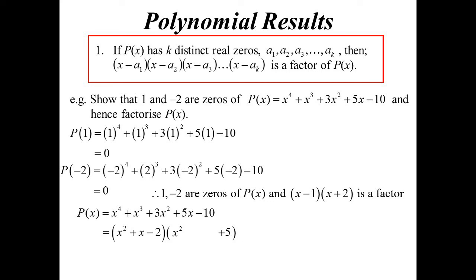So that second factor just stays as x squared plus 5. Well, that one doesn't factorise down, not with real numbers anyway. We get x minus 1, x plus 2, x squared plus 5 for our factorisation.